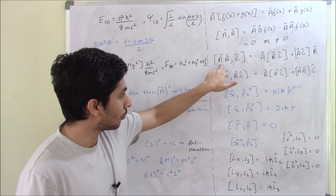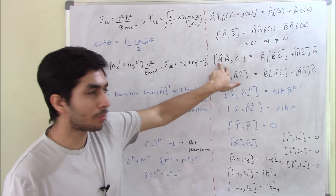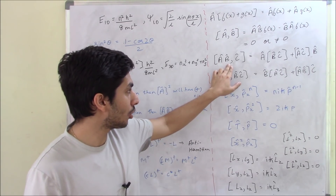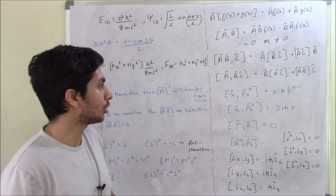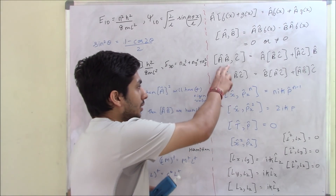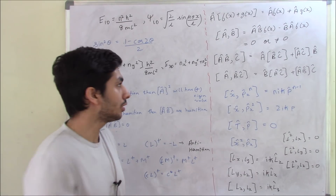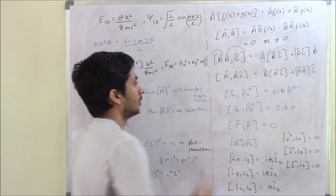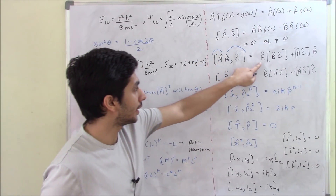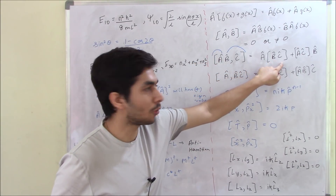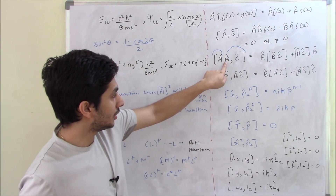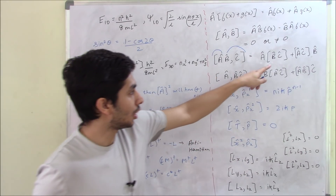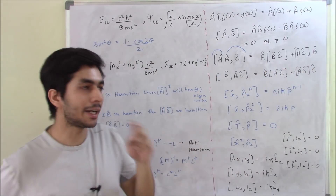If we have [AB, C], these two operators are together. The commutator of operator A, operator B comma operator C is found by taking one operator to the left and one to the extreme right. So we get: operator A times [B, C] plus [A, C] times operator B.